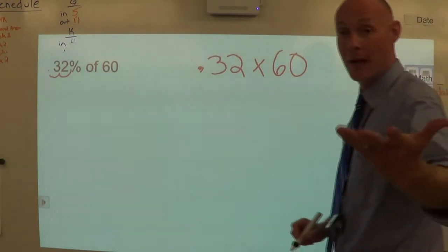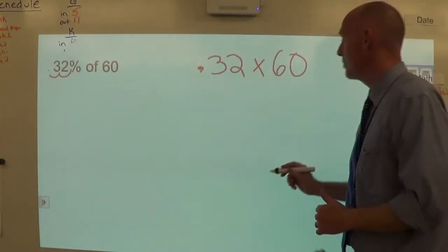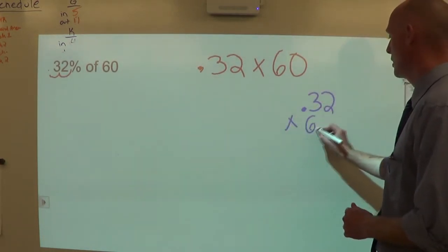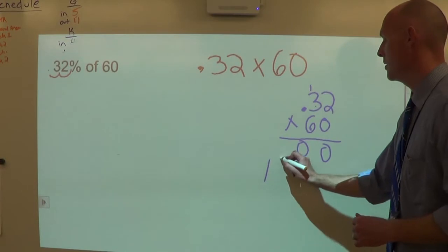Awesome, let's multiply it as if we're multiplying decimals: thirty two hundredths times sixty. Decimal 0.32 times 60. We have zero, then we have zero, then we have six times two is twelve, carry the one. Six times three is eighteen plus one is nineteen.